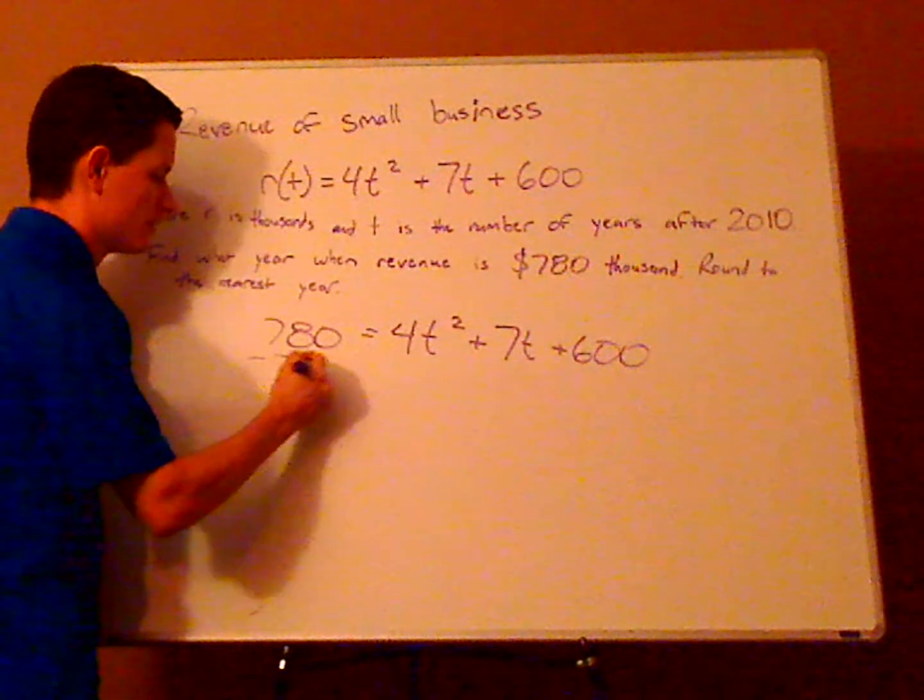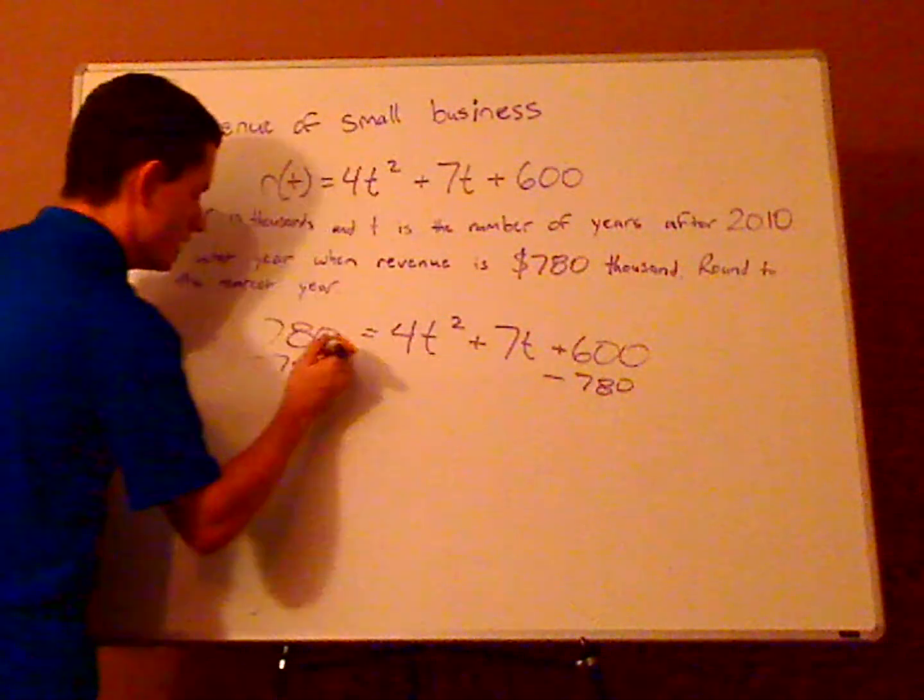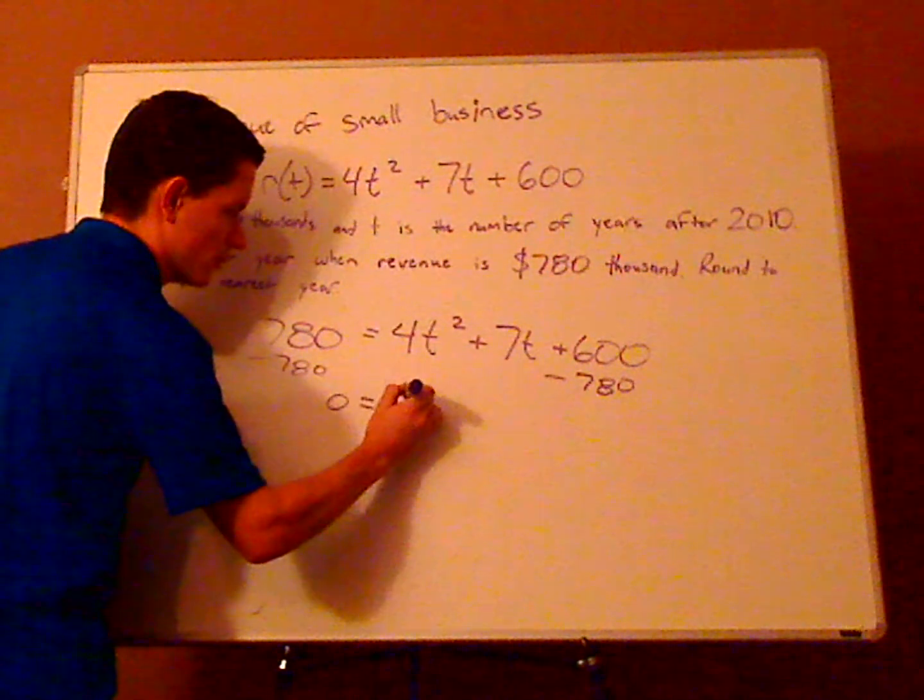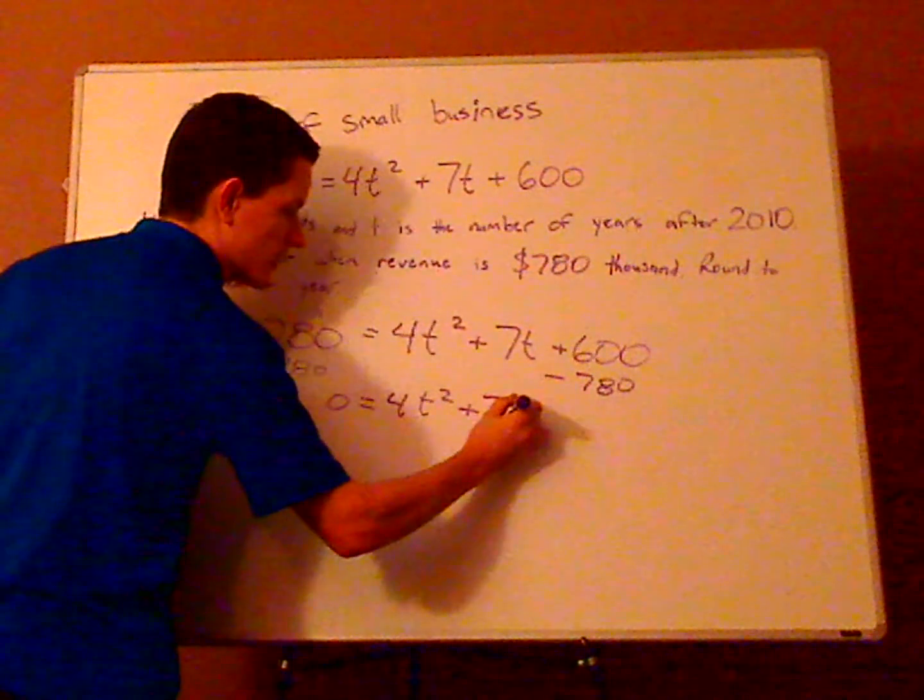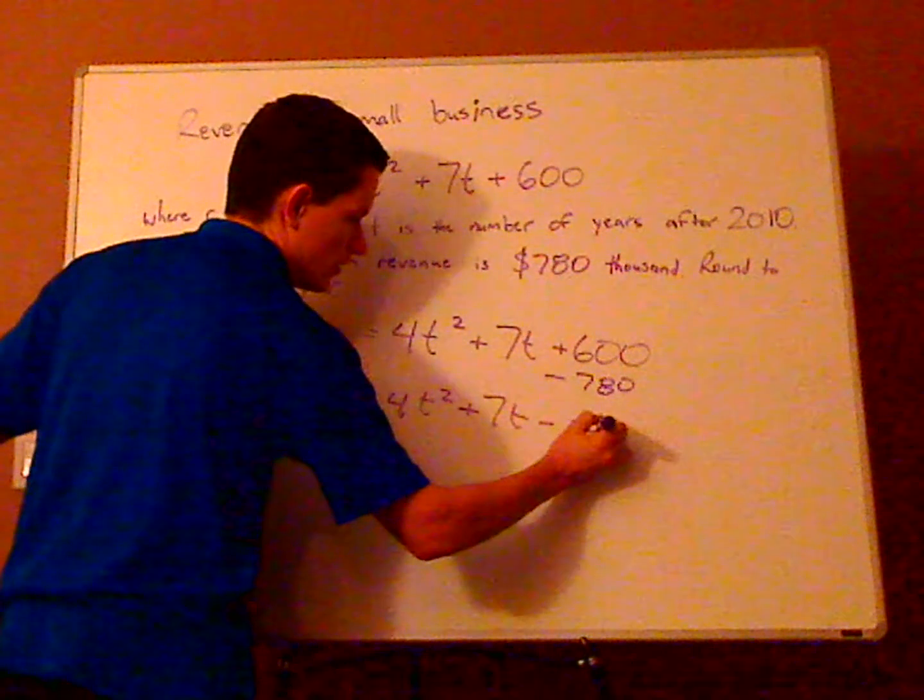So you subtract 780 from both sides. And so this cancels, so you're left with 0 = 4t² + 7t - 180.